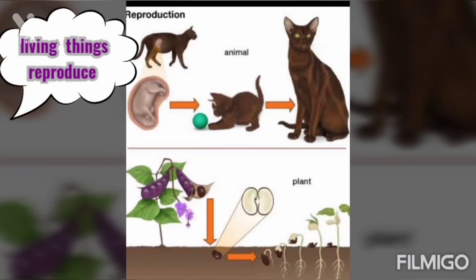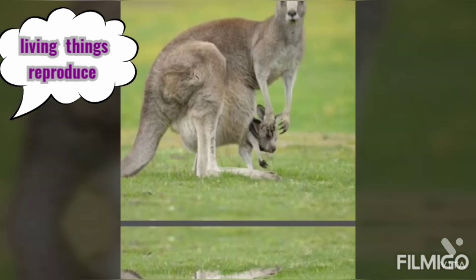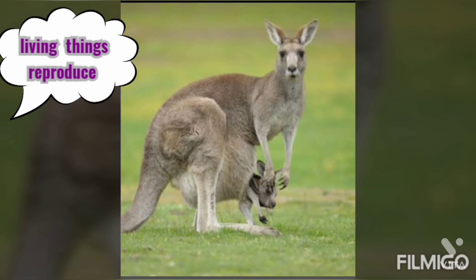Living things reproduce. Living things produce babies of their own kind — this is called reproduction. Animals give birth to young ones. For example, a cow gives birth to a calf, and a kangaroo gives birth to a joey. Most plants grow from seeds.